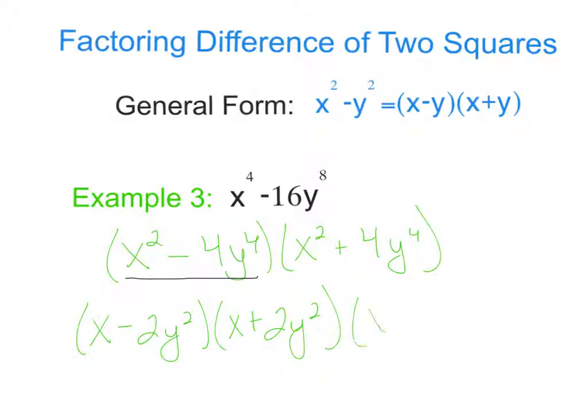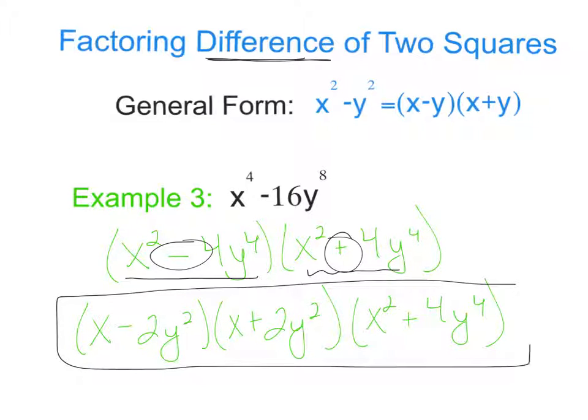And then we still have the x squared plus 4y to the 4th. Now, remember that this is the difference of 2 squares, so that's why we cannot factor this one anymore, because it's a plus and we can only do it when it is a minus. So this is our final result. So remember, you have to keep going if you have another difference of 2 squares.